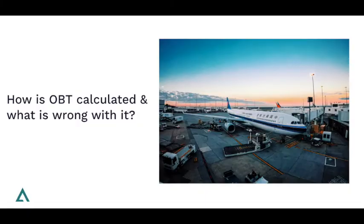How do we get off-block time at the moment, and what's the issue with it? It depends a little bit geographically. In Europe, there is the official ACDM framework imposed by Eurocontrol, where it's mandatory at larger airports for each airline to provide a target off-block time into the AODB so all airport stakeholders can see it. This is typically done by the ground handler, who takes responsibility for continuously updating the predicted off-block time during the turnaround.